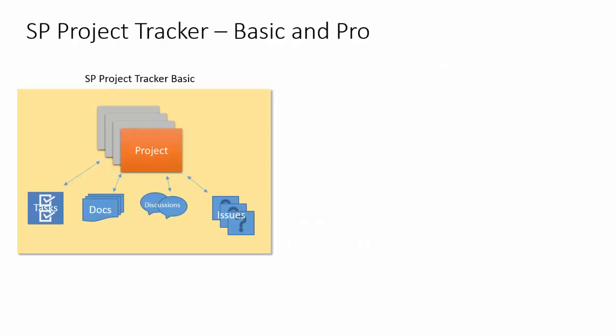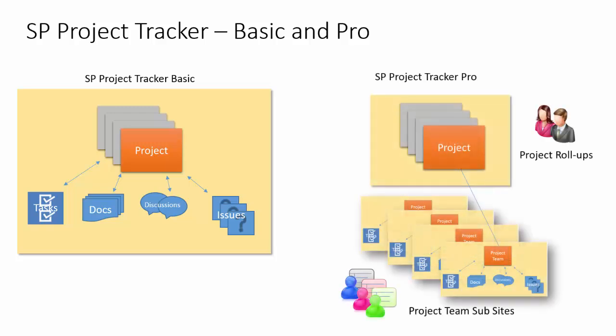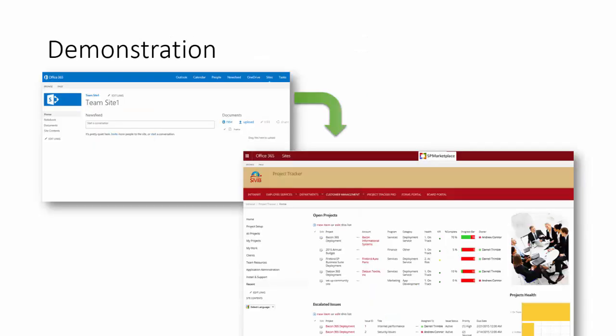SP Project Tracker is available in two forms. SP Project Tracker Basic is a single site where you can track not only the projects, but tasks, documents, discussions, and related issues to that project. The Pro version allows you to continue to use that single site concept, but for larger projects or projects where you need to share information with external users, it also allows you to create project team subsites. So let's see a demonstration of how you can turn a team site into a full-featured project management offering.